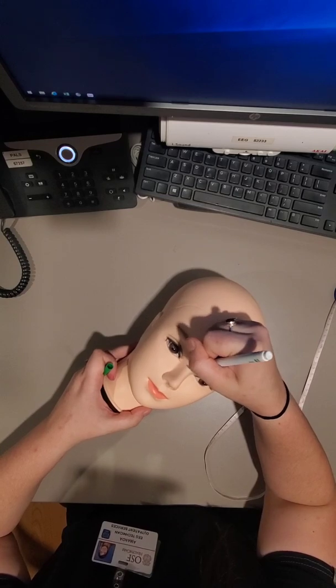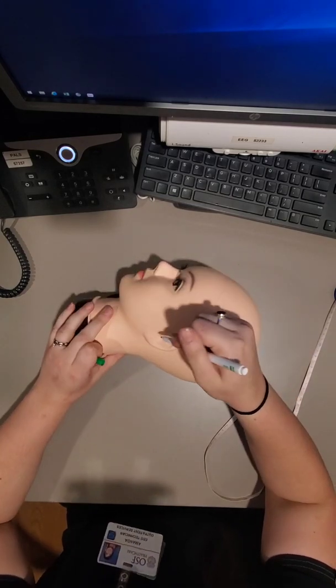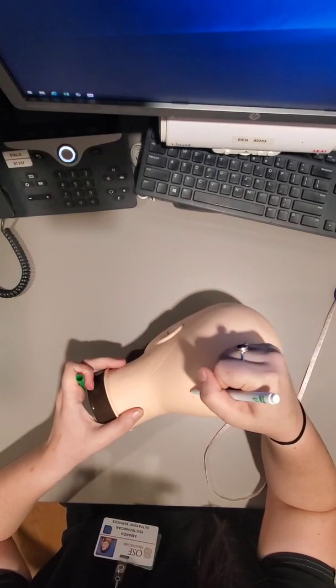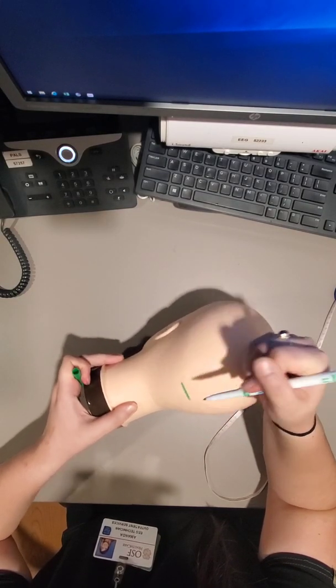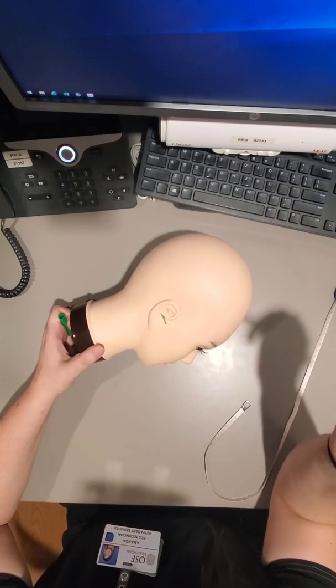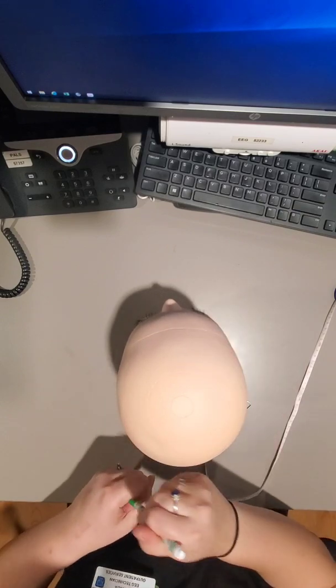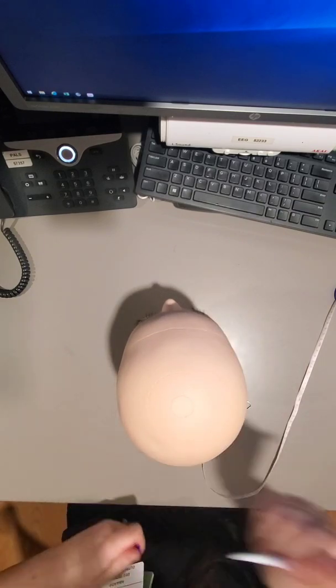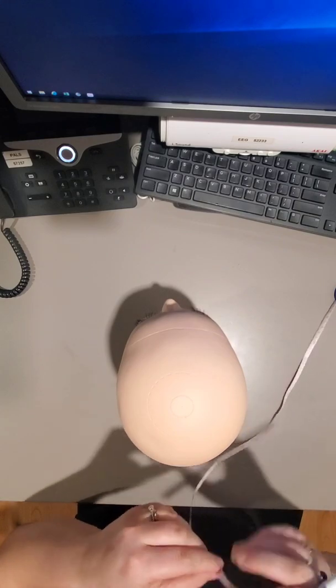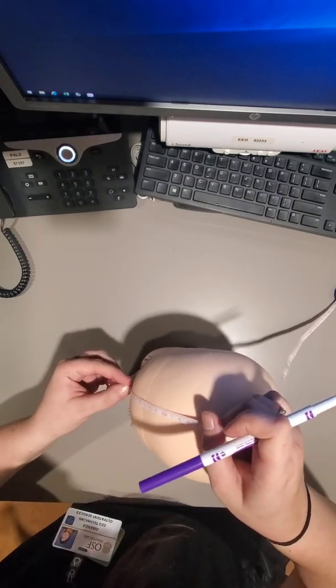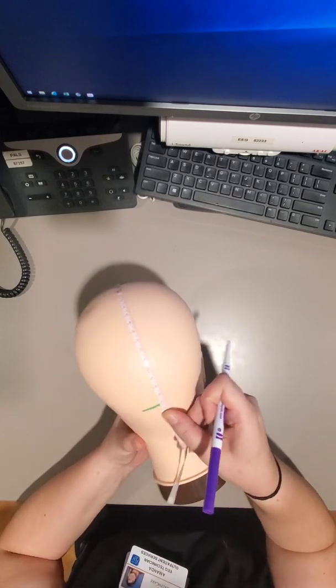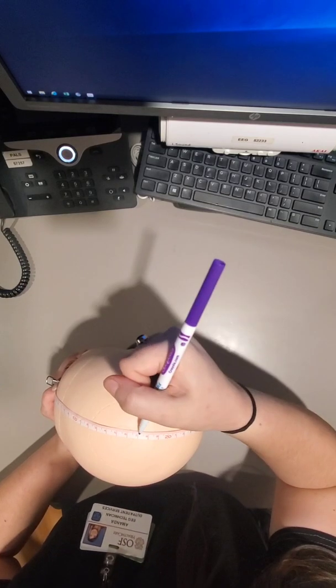I'm going to measure from the nasion to the left pre-auricular point, and then right pre-auricular point. Now I'm going to measure from the nasion to the inion. 34, half of 34, it's 17.